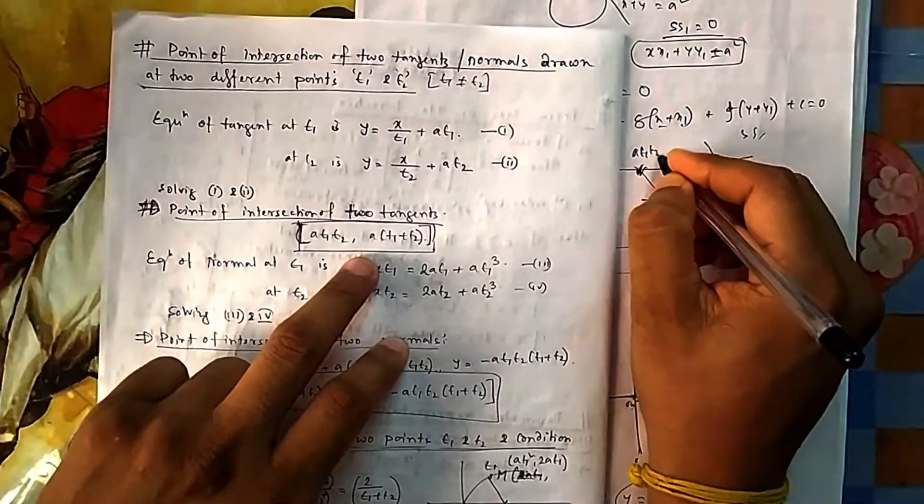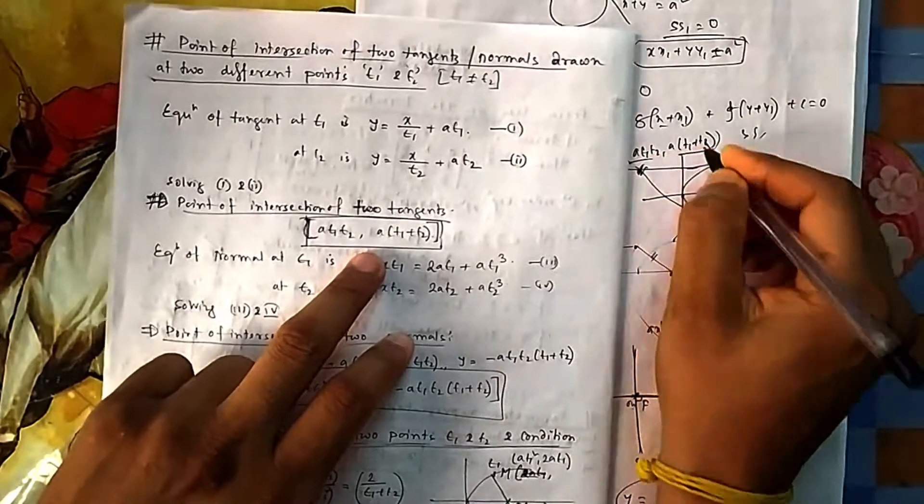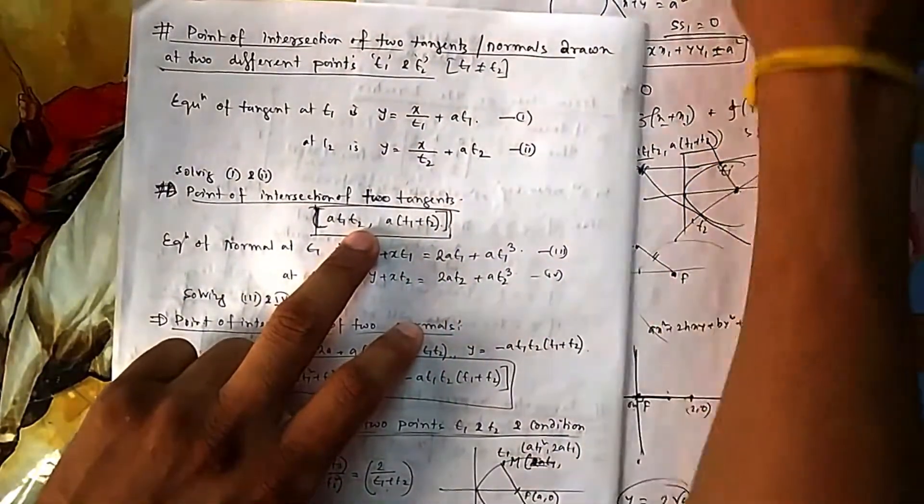So this is also interesting to remember: a t1 t2 comma a(t1 plus t2). So this intersecting point also you can directly remember.